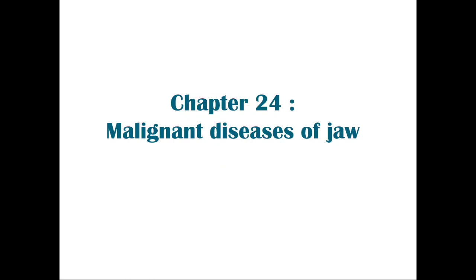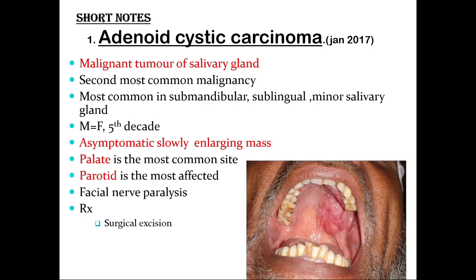The next chapter covers malignant diseases of the jaw. When asked about adenoid cystic carcinoma, it is a malignant tumor of the salivary glands, the second most common, most commonly affecting the submandibular, sublingual, and minor salivary glands. The male-to-female predilection is equally distributed, occurring in the fifth decade. It most commonly affects the palatal region due to the involvement of minor salivary glands, presenting as an asymptomatic slowly enlarging mass. The parotid gland involvement may show facial nerve paralysis. Treatment is surgical excision.